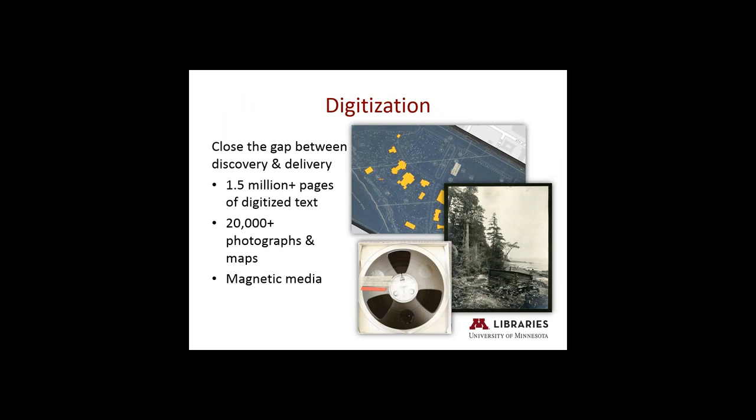One of our major focuses is digitization. We are attempting to close the gap between discovery of archival materials and the delivery to them, putting archival information in the flow of your own research activities. In many cases, that means digitizing the material and getting them online so that you will discover it simply through using Google. To date, we've digitized over 1.5 million pages of documents, publications, reports, and other paper-based material. We've scanned over 20,000 photographs and maps depicting university history, activities, people, and places. And this year, we are beginning a project to digitize over 2,000 audio tapes, especially those related to KUOM, the university's radio station.